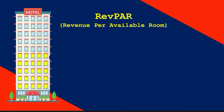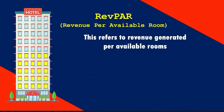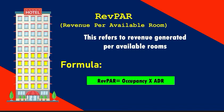The next one is RevPAR or revenue per available room. RevPAR refers to revenue generated per available room. If the hotel's RevPAR increases, it means that the average room rate or the occupancy rate is increasing. This is very important because it helps hoteliers measure the overall success of the hotel. It is calculated by multiplying occupancy rate times ADR.